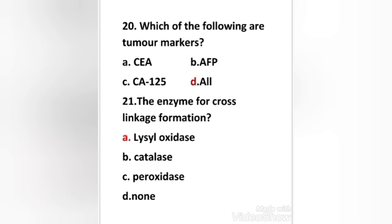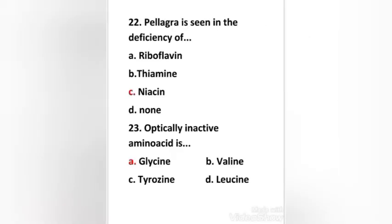The NC4 cross-linkage formation: lysyl oxidase, catalase, peroxidase, none. Right answer is option A: lysyl oxidase. Next question: Pellagra is seen in the deficiency of riboflavin, thiamine, niacin, none. Right answer is option C: niacin. Pellagra is seen in the deficiency of niacin.